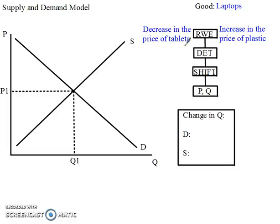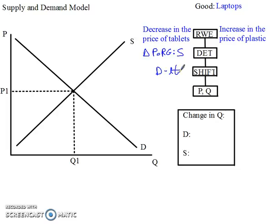If tablet prices go down, more consumers are going to want to buy tablets instead of laptops. My determinant is going to be a change in the price of related goods — and I believe these goods are substitutes. For most people in the market at large, tablets and laptops are substitutes, so the demand for laptops is going to shift to the left, shifting to D2.